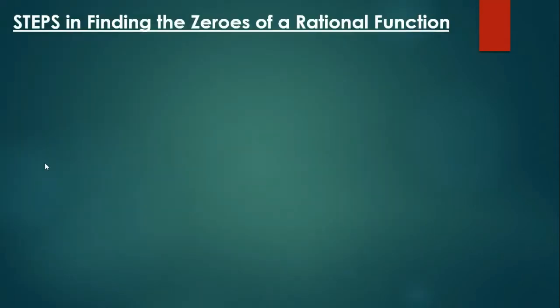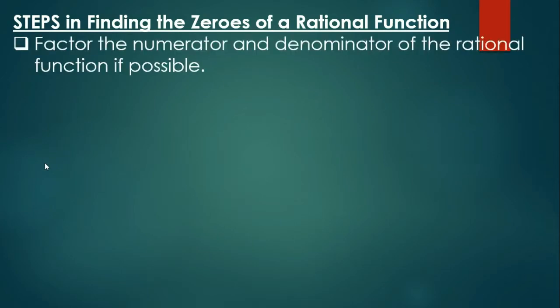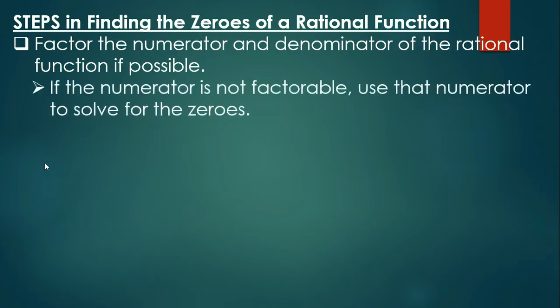Here are the steps in finding the zeros of a rational function. First, factor the numerator and denominator of the rational function if possible. If the numerator is not factorable, use that numerator to solve for the zeros. Kapag hindi pwedeng i-factor out ang ating numerator, we equate that to zero to solve for the zeros of the rational function.